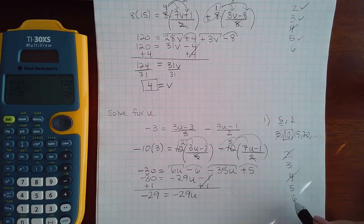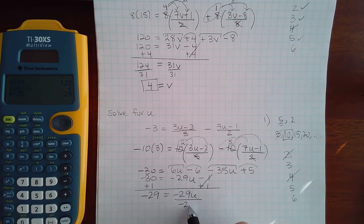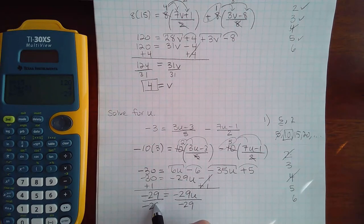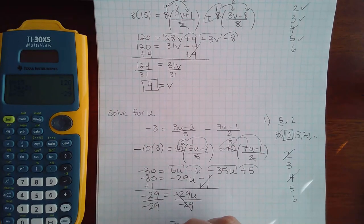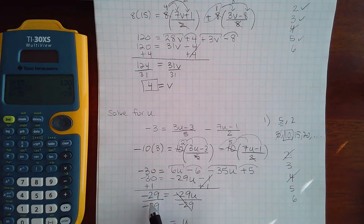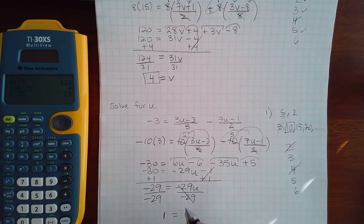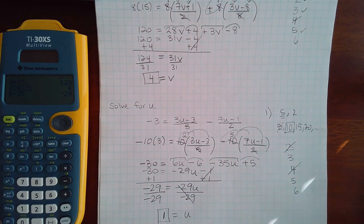And then the last step is to divide by the coefficient, negative 29 and negative 29. So here they cancel. I'm left with u by itself. And negative 29 divided by negative 29 is a positive 1. So my answer here is actually a positive 1.